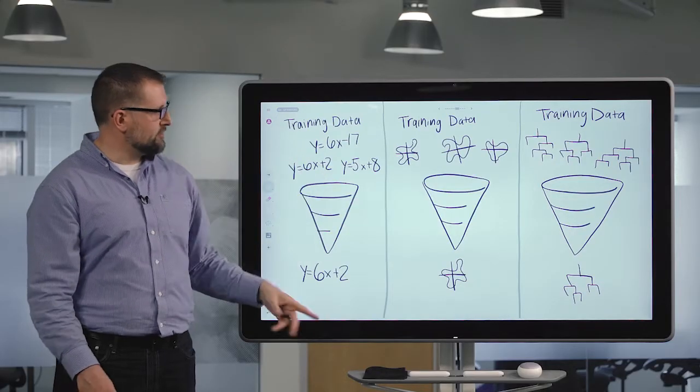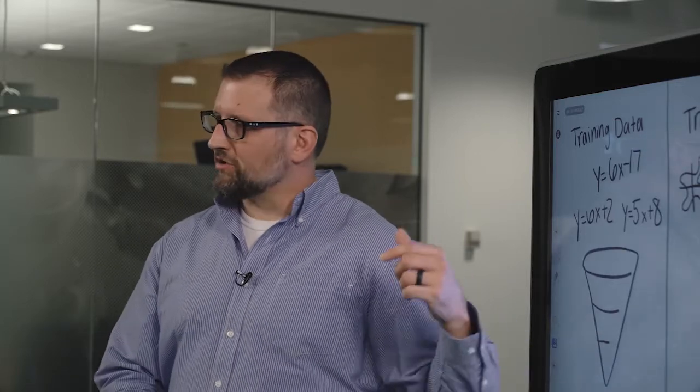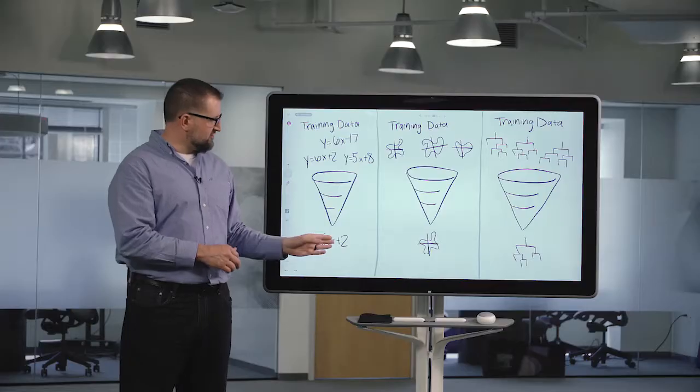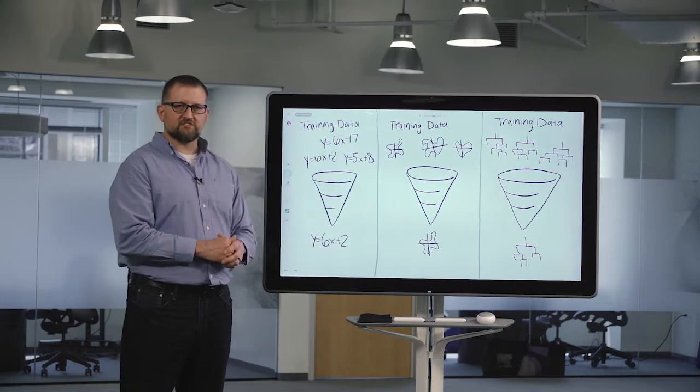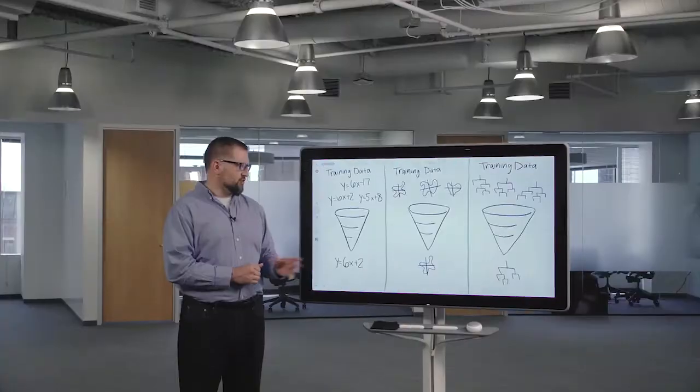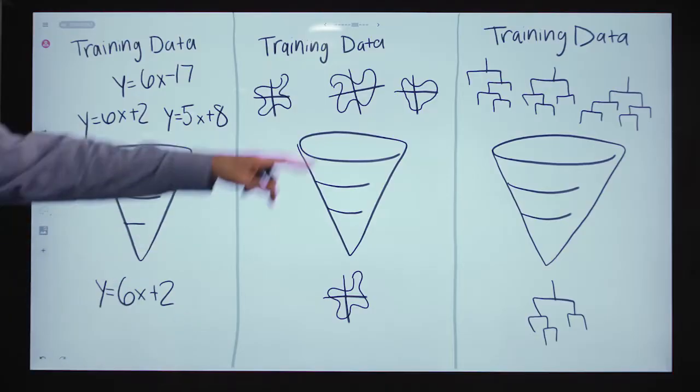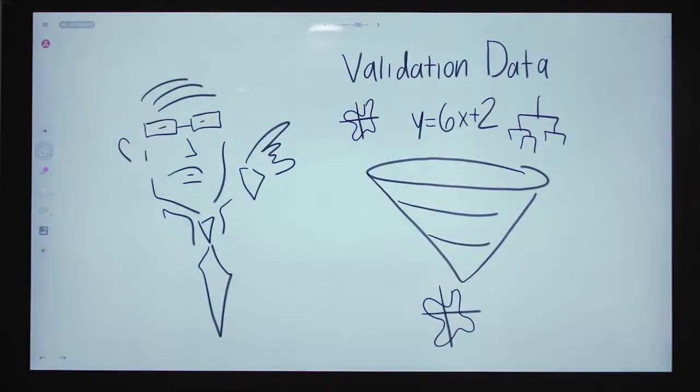We cannot use that data to evaluate model performance, so we take each one of these models, we make predictions on our validation partition, and we assess how well each of these models predicts on that unseen data. But now we have three different models, we only need one model, so we need to choose one. The natural thing to do here is to choose the model that fits the validation data the best.